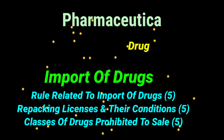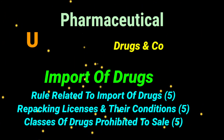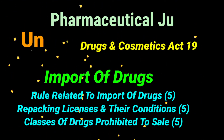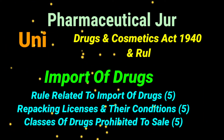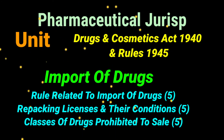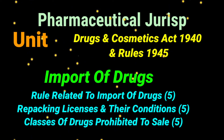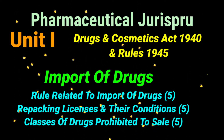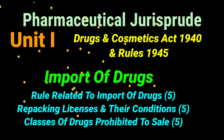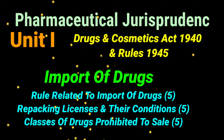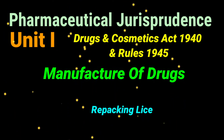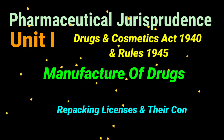In Unit 1, there are two topics: import of drugs and manufacture of drugs. For the first chapter — import of drugs as per the Drugs and Cosmetics Act 1940 and Rules 1945 — the most important questions are: the role related to import of drugs, repacking licenses and their conditions, and classes of drugs prohibited for sale.